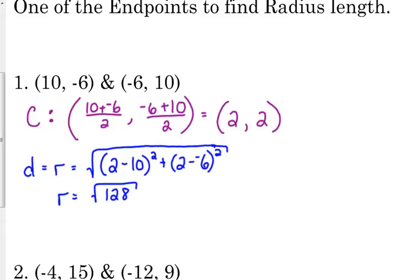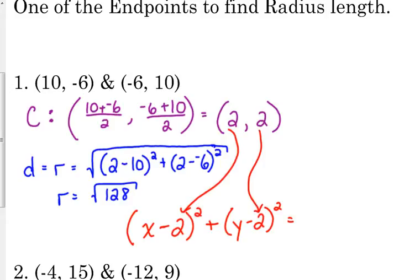But remember when we write the equation of our circle, we turn around and we square r, so that square root just goes away. So our equation is (x - 2)² plus (y - 2)² is equal to 128 because that's supposed to be r squared right there. So still working with the same formula, just different information to start with before we can actually write that equation.